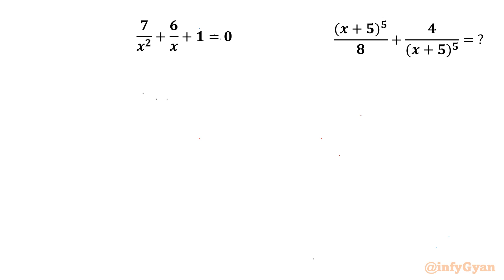Welcome back to Infigyan. In this video, we will solve one very interesting algebra problem from Math Olympiad. We have to evaluate the expression (x+5)⁵/8 + 4/(x+5)⁵. Let's call this expression E. The given equation is 7/x² + 6/x + 1 = 0.